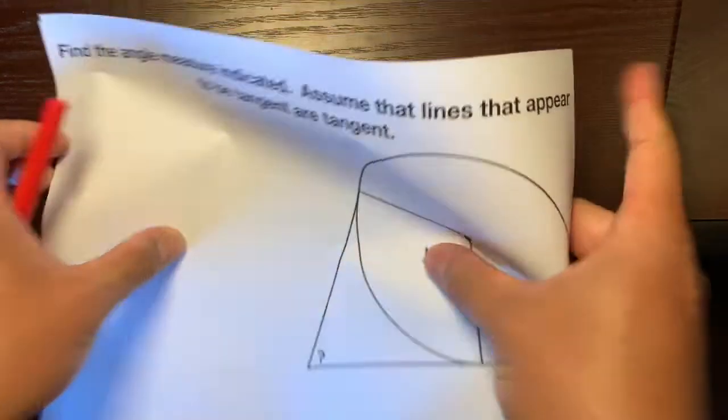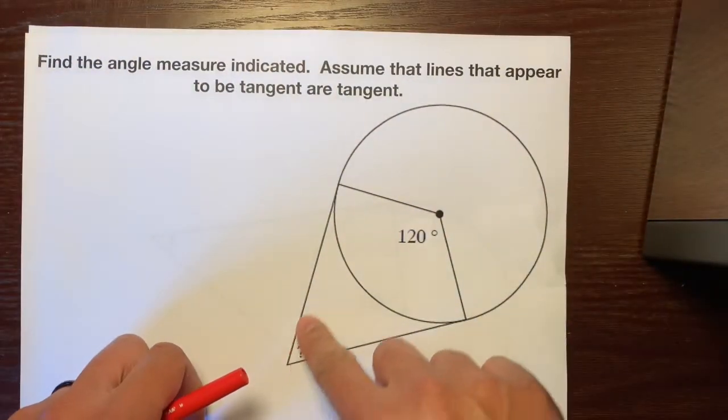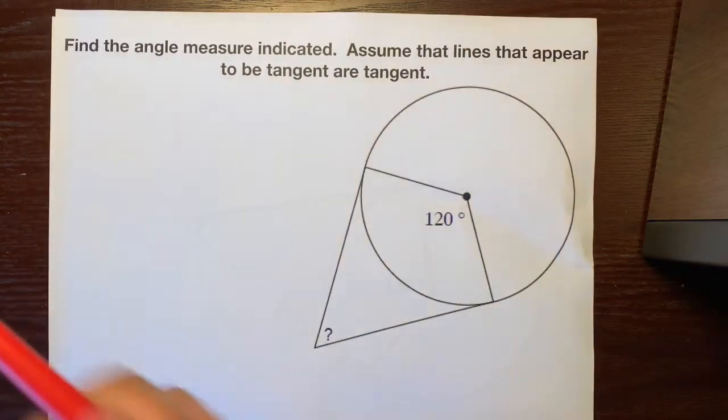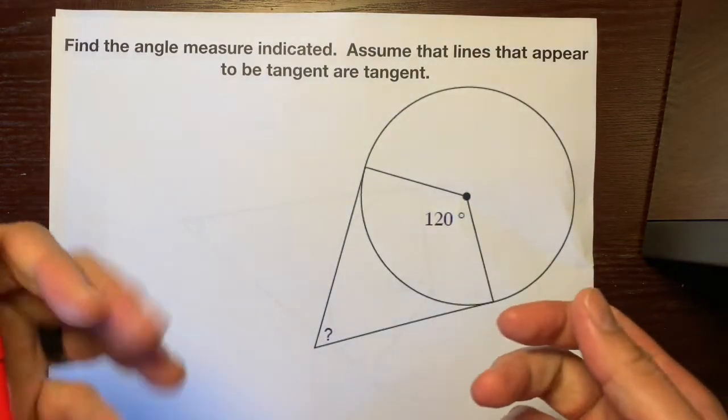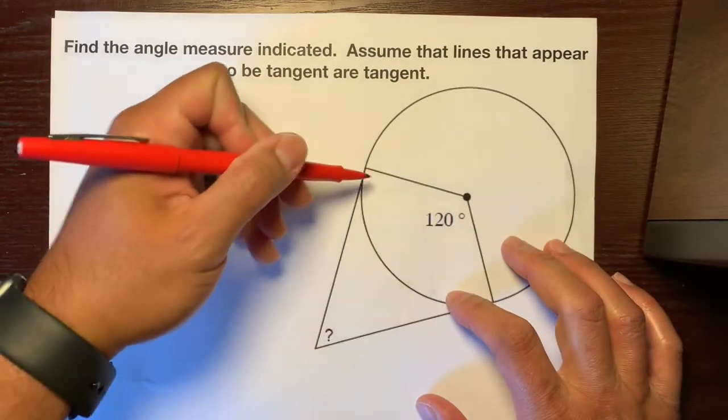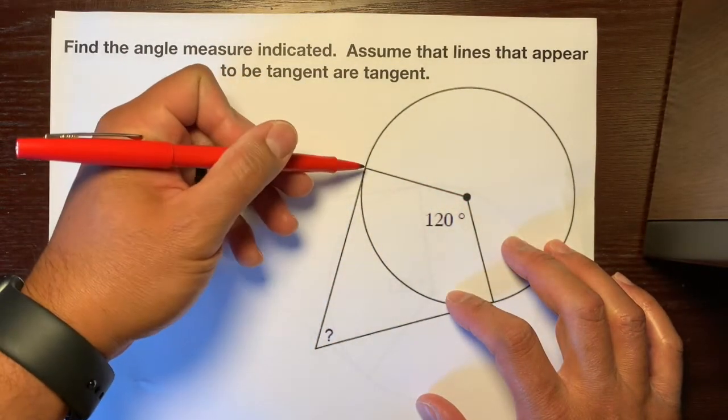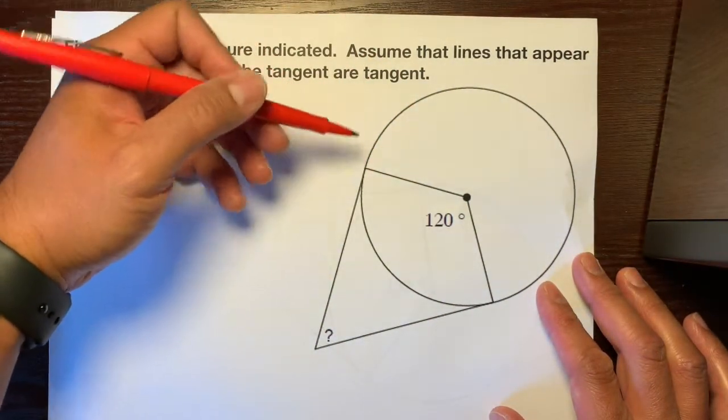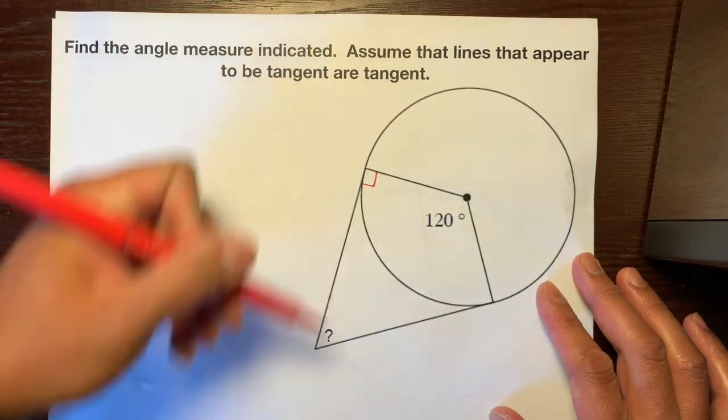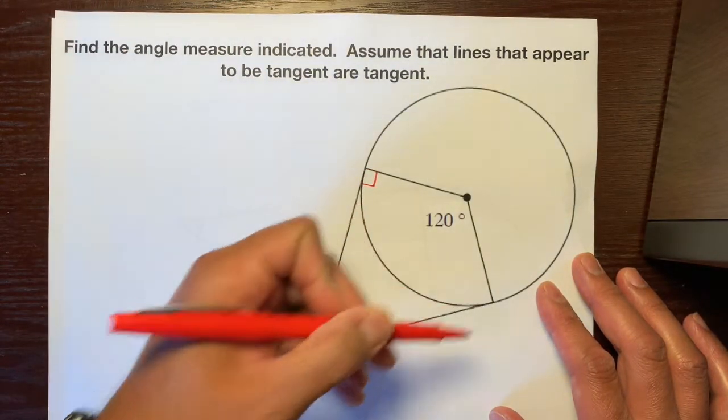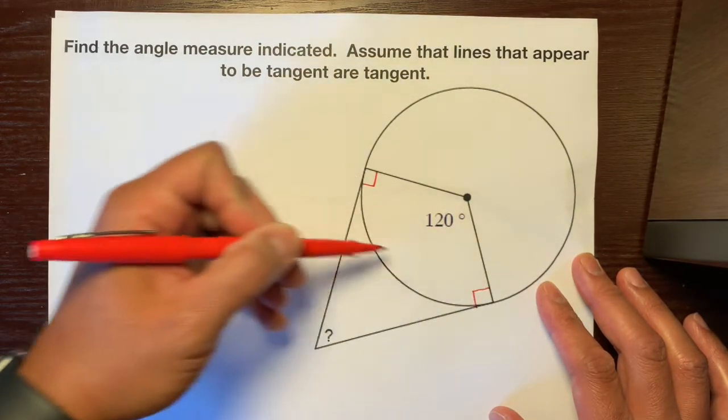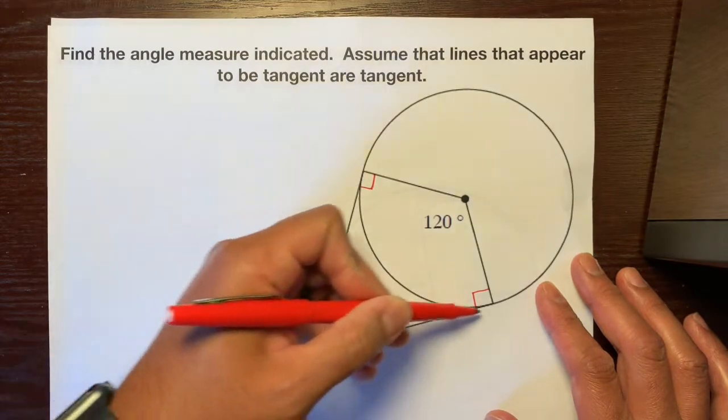So again, let's assume that lines that appear to be tangent are tangent. So here's a tangent line and here's the radius, and if you guys remember from a previous video, or from what your teacher told you, tangent lines and their radius where they intersect on the circle are perpendicular. And so perpendicular lines make right angles, so this is a right angle. And here's another tangent line and its radius, so this makes a right angle. And right here we have a quadrilateral.